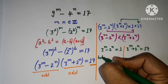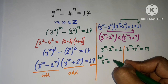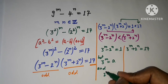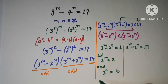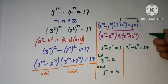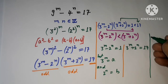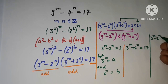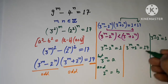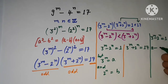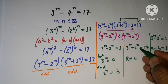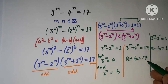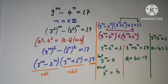So 3 to the power m minus 2 to the power n equals 1, and 3 to the power m plus 2 to the power n equals 17. I can let 3 to the power m equal a and 2 to the power n equal b to solve this question. So a minus b equals 1, and a plus b equals 17.